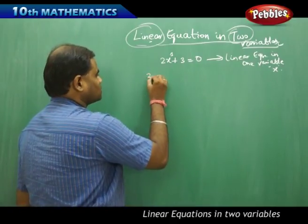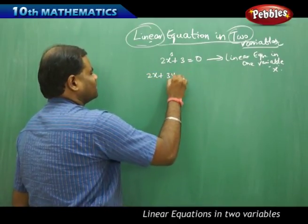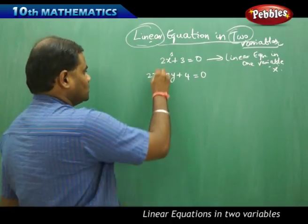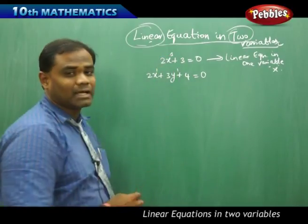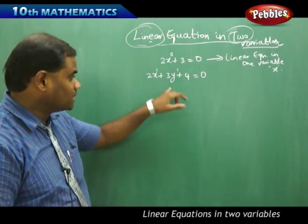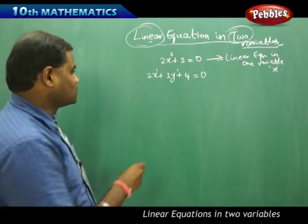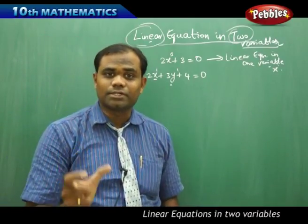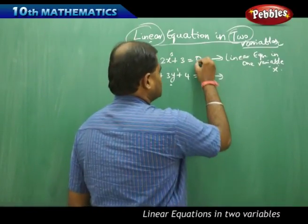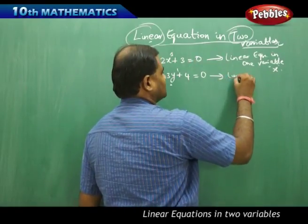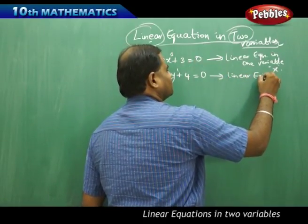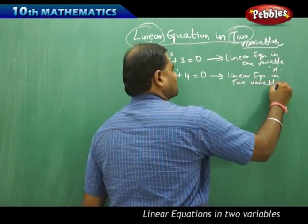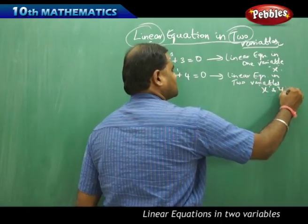Similarly if I take 2x plus 3y plus 4 equal to 0, then this is called a linear equation because each of its variables have the highest powers as 1, therefore it must be a linear equation. But because I have two unknowns x and y, this particular equation is called a linear equation in two variables x and y.